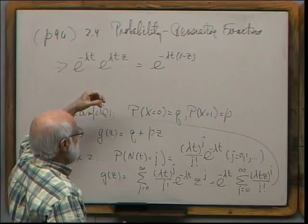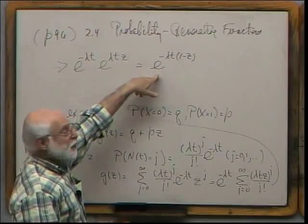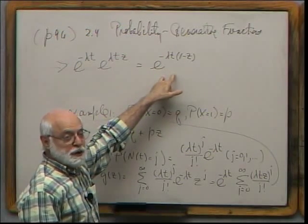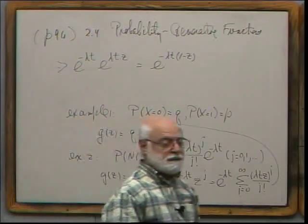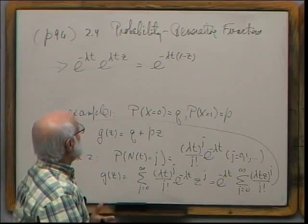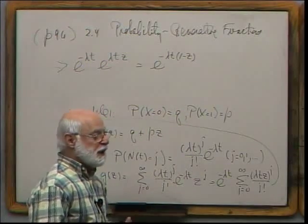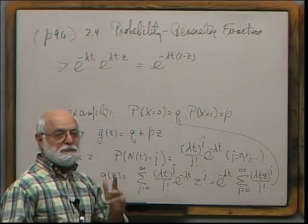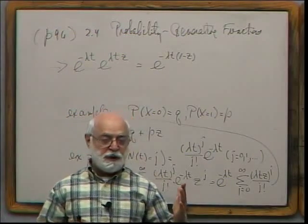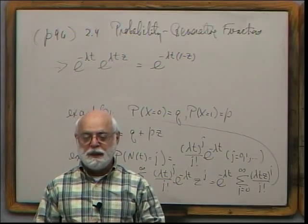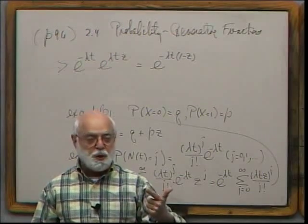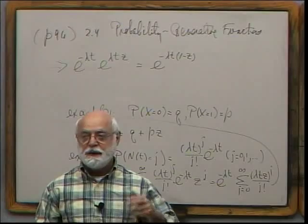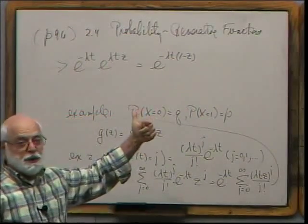If I have the probabilities I can get the generating function, and the answer is yes, I can go backwards: the generating function uniquely defines the distribution, so it just changes the form of the information. Ordinarily, you have equations that relate the probabilities to each other — like rate-up equals rate-down — and instead of solving those directly, you transform them. That gives a different equation for the generating function, which you solve and then invert. Sometimes this is an enormous savings.